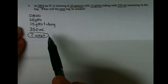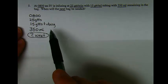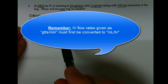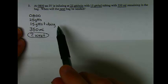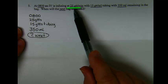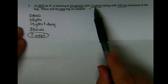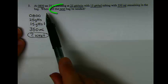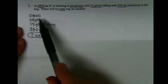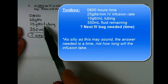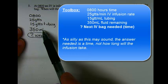This next example of a time problem gets a little more complicated because your infusion is not calculated in milliliters per hour, but rather in drops per minute. At 0800 hours, an IV is infusing at 25 drops per minute through 15 drop per milliliter tubing with 350 milliliters remaining. When will the next bag be needed? In the toolbox we have the time, flow rate, the tubing used, and the volume in the bag when it was checked.